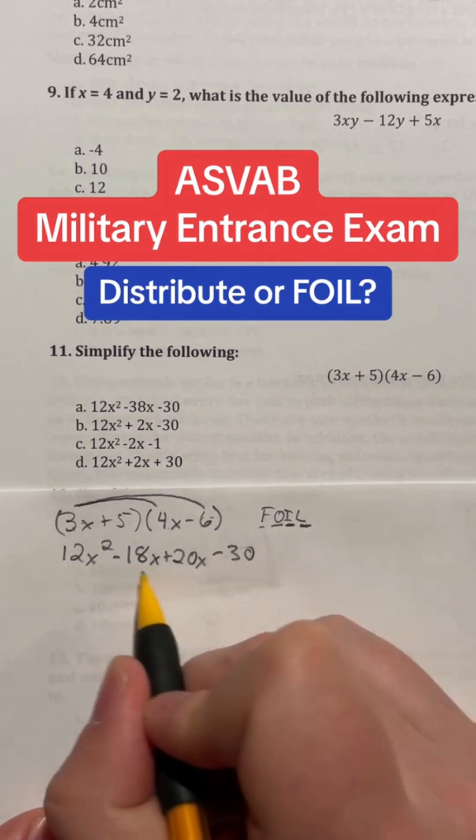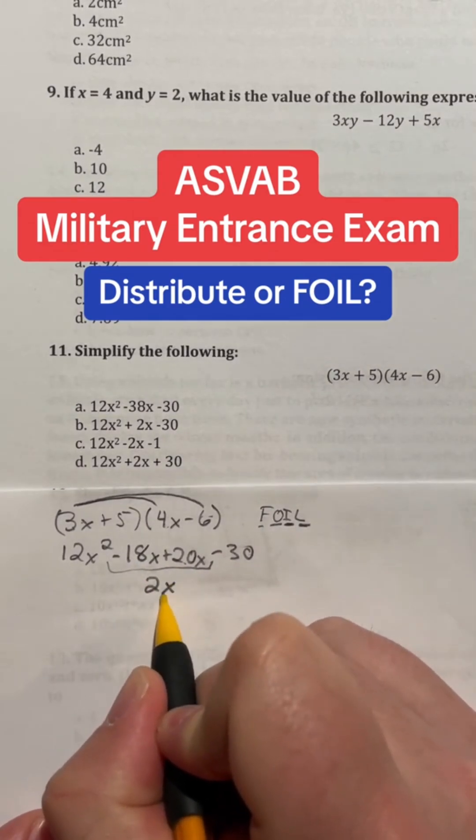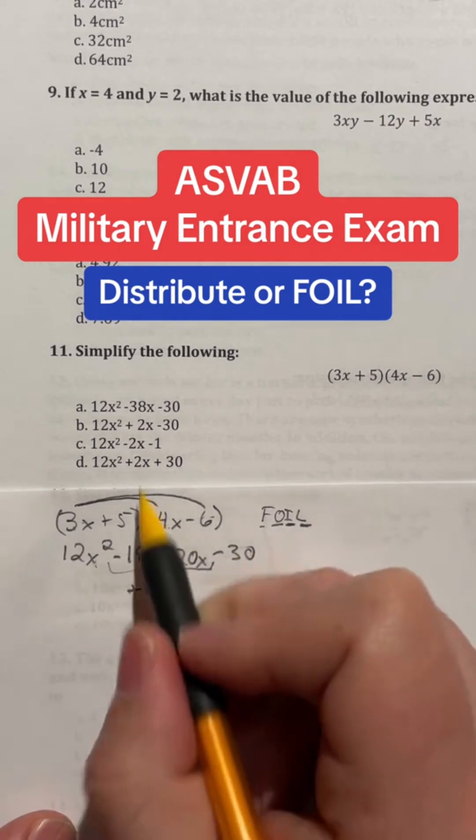Now the 12x squared and the negative 30 will stay the same, but these two terms will actually combine by doing 20 minus that 18 to give me 2x. So we have 12x squared plus 2x minus 30. If I look through my options, that looks like our final answer here is B.